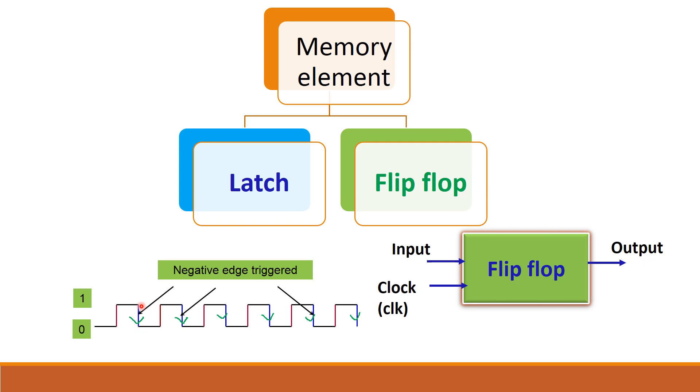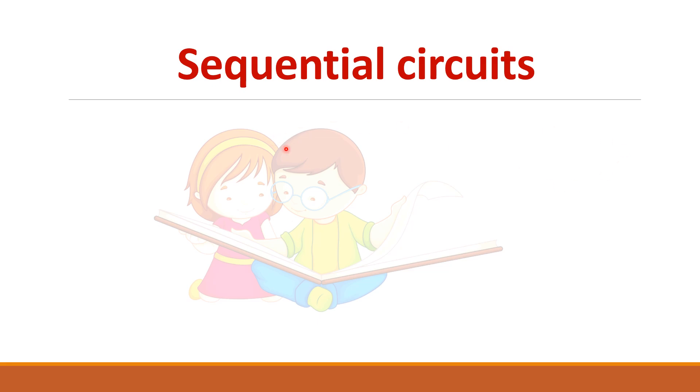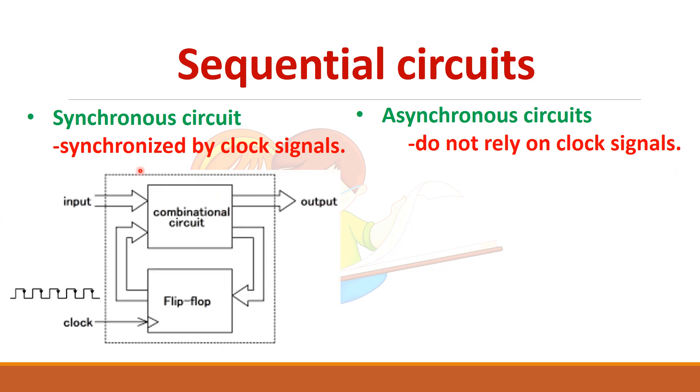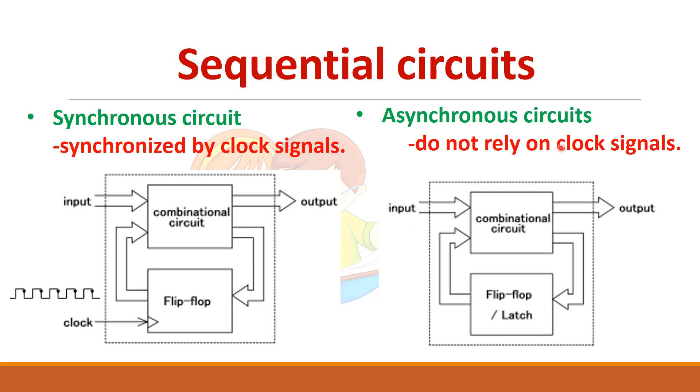So whenever the clock signal goes from 1 to 0, the flip-flop will respond to the input variations. We have already seen about sequential circuit. So sequential circuit, there are two types, synchronous circuit which is synchronized by clock signal and asynchronous circuit which do not relay on clock signals. So you see this synchronous sequential circuit. Here the memory element which we use is a flip-flop, because you need a clock signal in a synchronous circuit. Whereas in asynchronous circuit, a latch can be used because they do not have a clock signal.